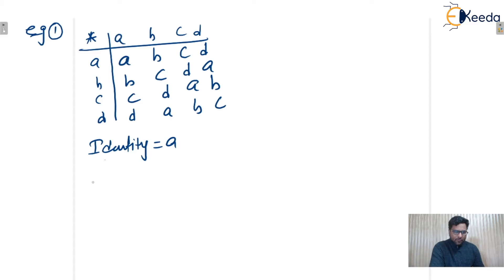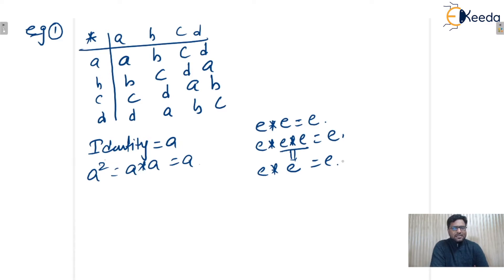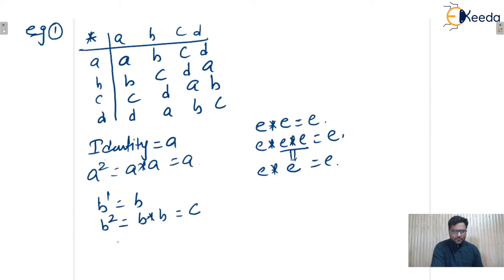A squared equals A star A, which is A — the identity element. Any power of the identity element is the identity element itself. B to the power 1 is B. B squared is B star B, which from the table is C. B cubed is B star B squared, that is B star C, which equals D.